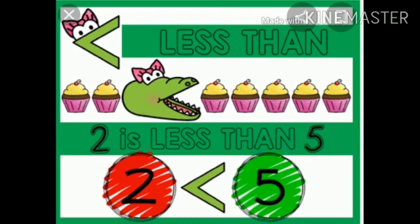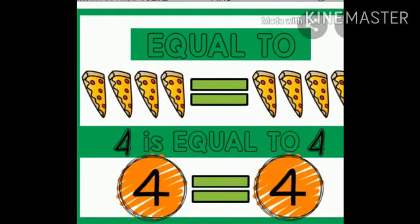between two ice creams and five ice creams, Croco's mouth will open to eat five ice creams. As it is bigger number, so we will put here less than sign and we will say two is less than five.